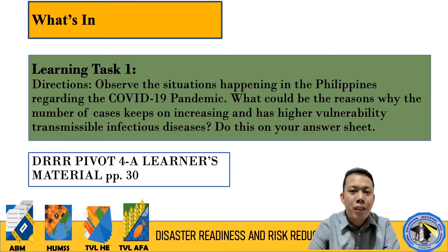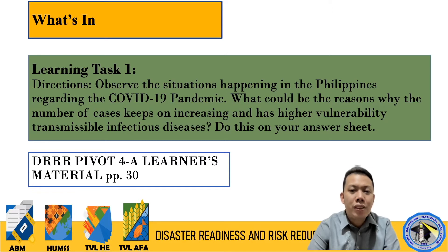If you'll notice before, the number was small, but it kept doubling. Before, it was only two to three thousand. But now we have ten thousand, twelve thousand cases. So what do you think are the reasons? Write your answer on your answer sheet.